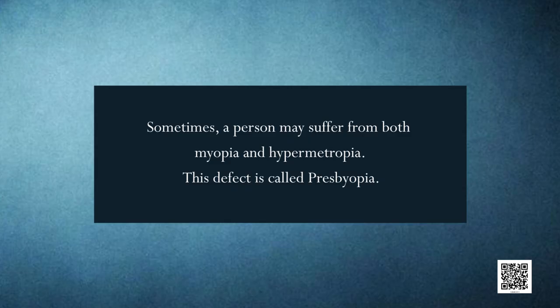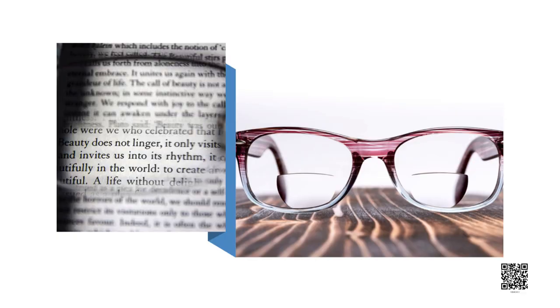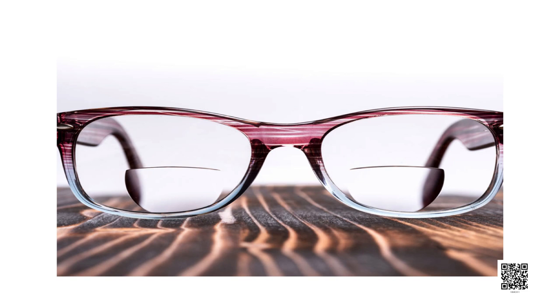Now let us talk about a disorder that occurs specifically in old age. The power of accommodation of the eye usually decreases with ageing, which means the ciliary muscles weaken with age and the focal length of the eye lens cannot be moderated. For most people the near point gradually recedes away. Sometimes a person may suffer from both myopia and hypermetropia — this defect is called presbyopia. Such people often require bifocal lenses consisting of both concave and convex lenses: the upper portion is a concave lens for distant vision and the lower part is a convex lens for near vision.